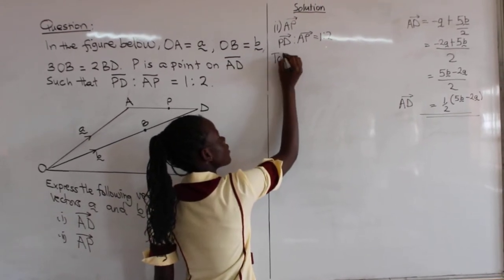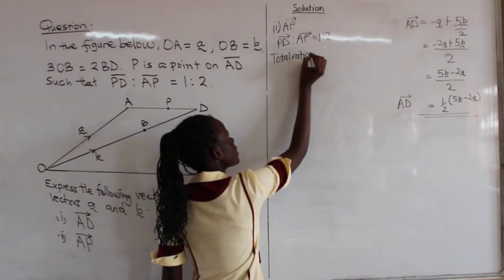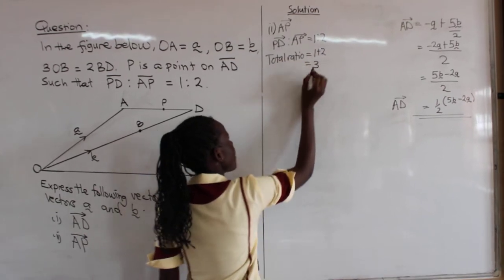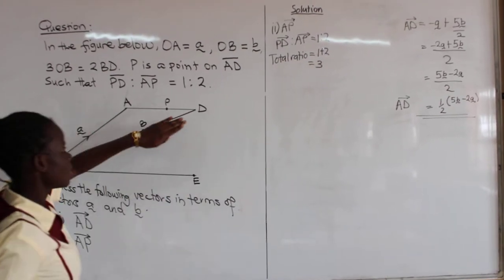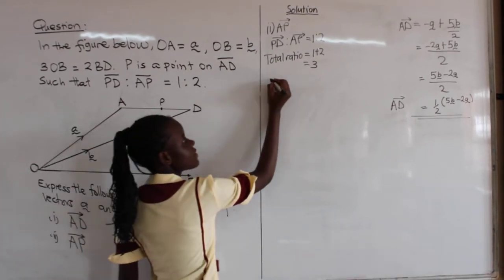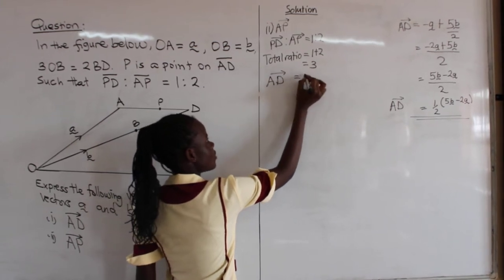So total ratio is equal to 1 plus 2, and this is 3. But remember this total ratio is the value of the total of our whole line. So this will be AD is equal to 3.